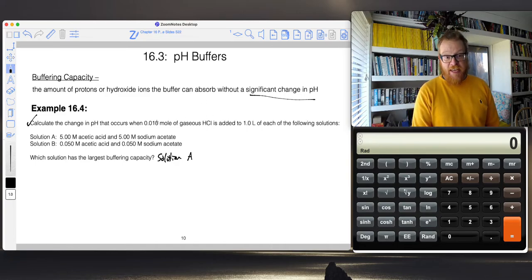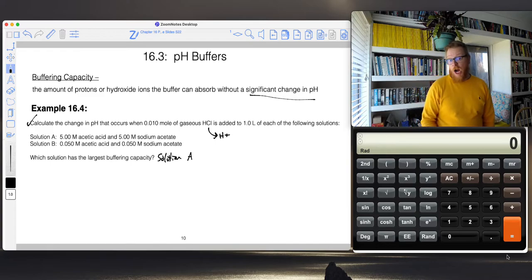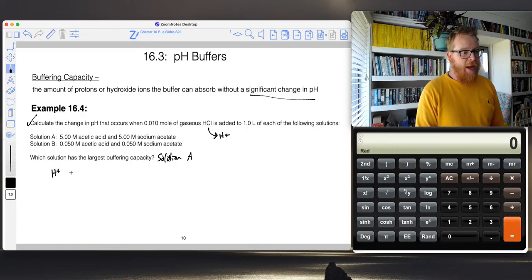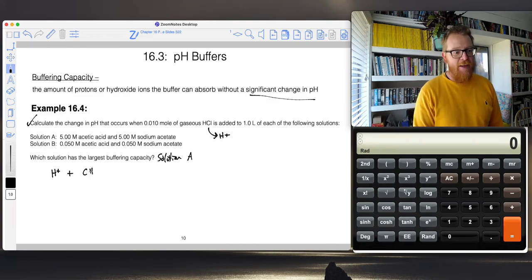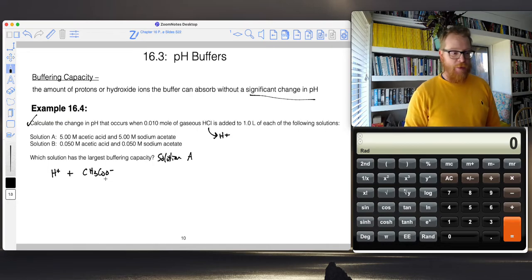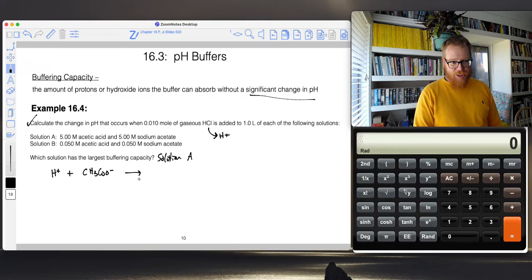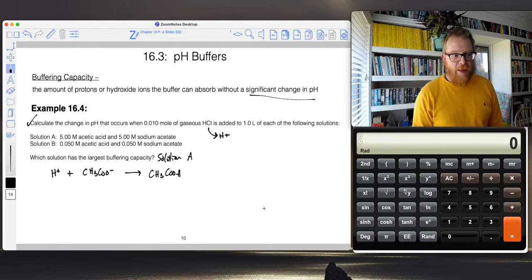This time we're adding HCl to our acetic acid buffer. We don't care about the chloride, we only care about the H plus. This is a before and after table type of calculation. The H plus is going to react with the acetate because the acetate is our conjugate base. This is a full complete reaction because a strong acid will always react to completion, and that makes more acetic acid.